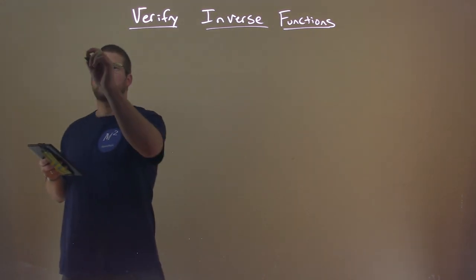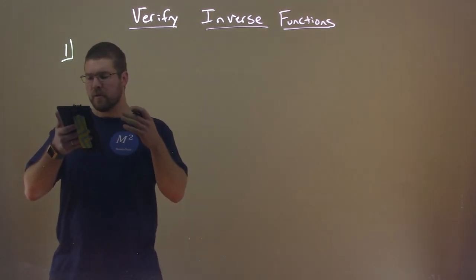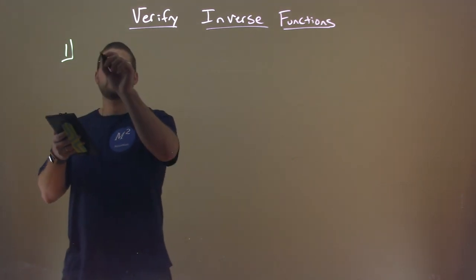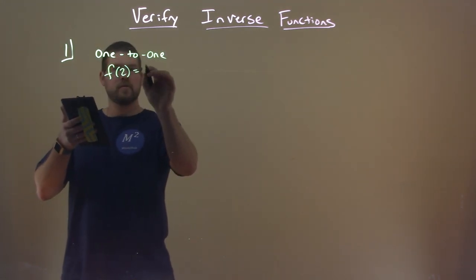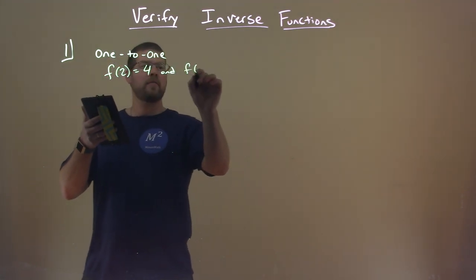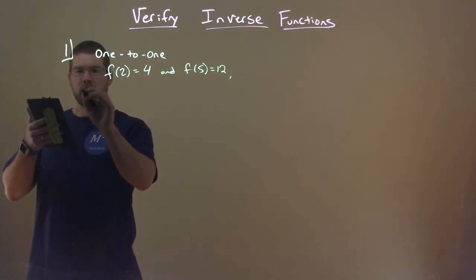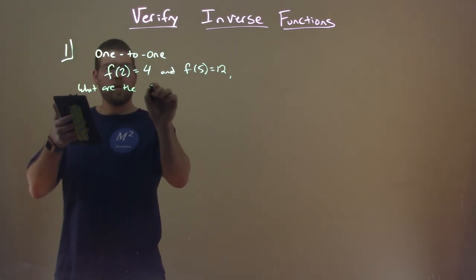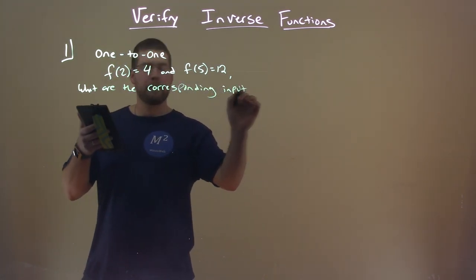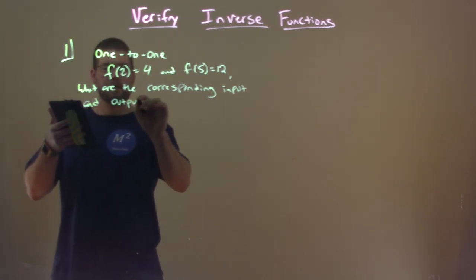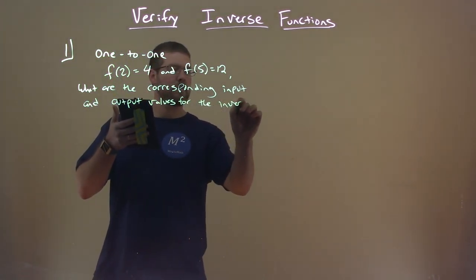So let's go with an example here. We're given a one-to-one function. We say f of 2 is equal to 4, and f of 5 is equal to 12. What are the corresponding input-output values for the inverse function?